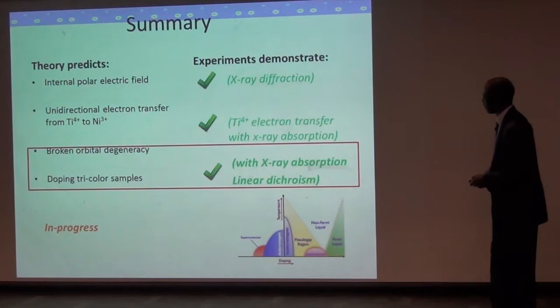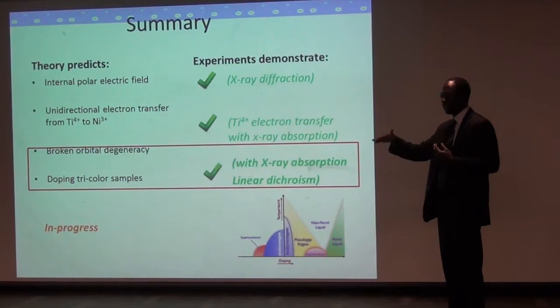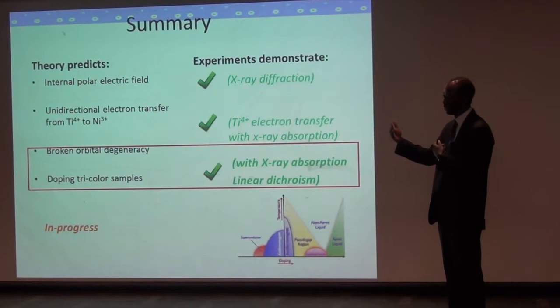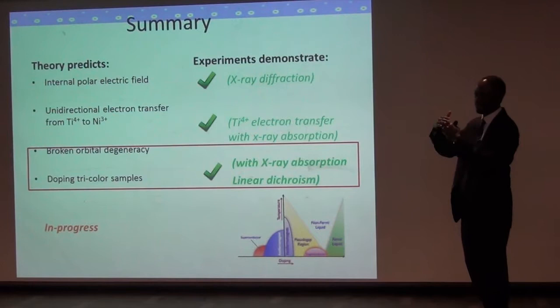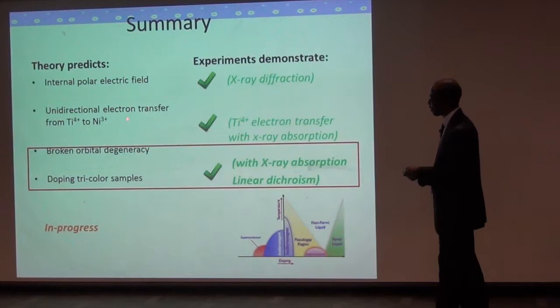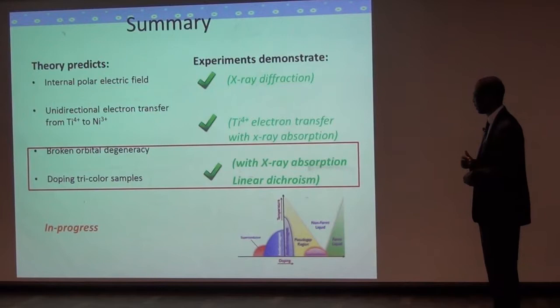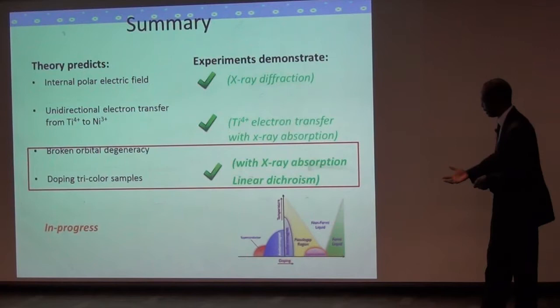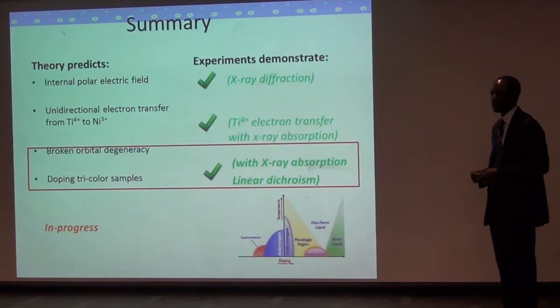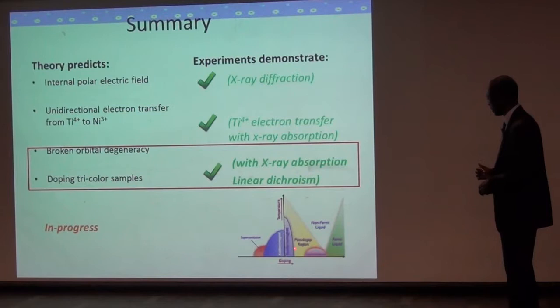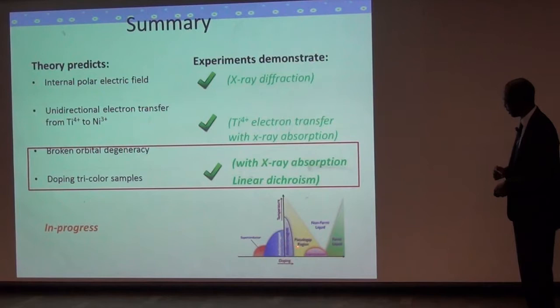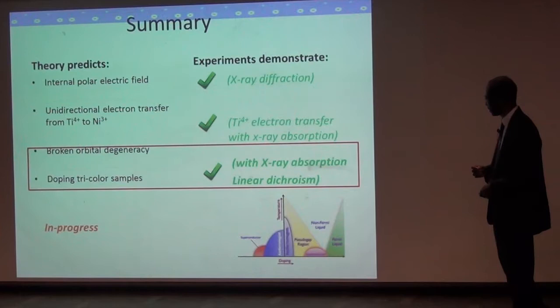Just to summarize: using x-ray diffraction, theory input, the COBRA technique, and x-ray absorption spectroscopy, we've been able to confirm theoretical predictions of an internal polar field, verify electron transfer from titanium to nickel, and determine that we're actually breaking orbital degeneracy in this material — making it look more and more like an actual cuprate material. What we're currently interested in doing now is doping these materials, because in the cuprate phase diagram the ground state is an antiferromagnetic insulator and you have to add extra charge to make them superconducting. We are currently working very hard to dope these tricomponent superlattices to hopefully make them superconducting, but it's more challenging than it sounds.